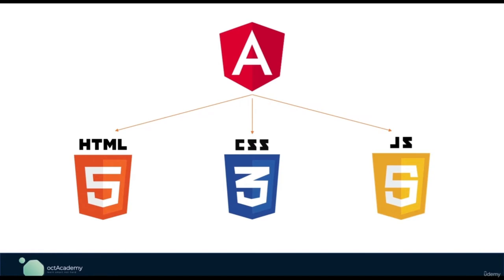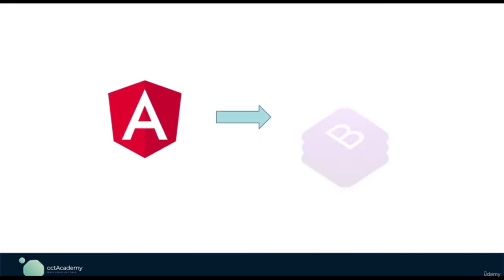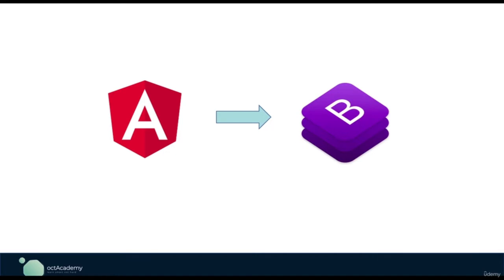Like the Bootstrap CSS framework — we learned about Bootstrap in the previous section — Bootstrap has pre-styled CSS classes. By importing them, we can design our web application fast without writing styles from scratch. Similarly, Angular also has pre-built methods and techniques. By using them, we can build our web application fast and more robust.